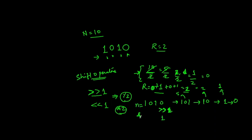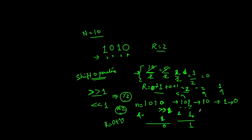We use the AND operator with 1 on the number and add the result to our count. Starting with 1010: AND with 1 — only the last bit is compared — so 0 AND 1 is 0, add 0. Right shift, now 101: 1 AND 1 is 1, add 1. Right shift, now 10: 0 AND 1 is 0, add 0. Right shift, now 1: 1 AND 1 is 1, add 1. Number becomes 0. Answer is 2.